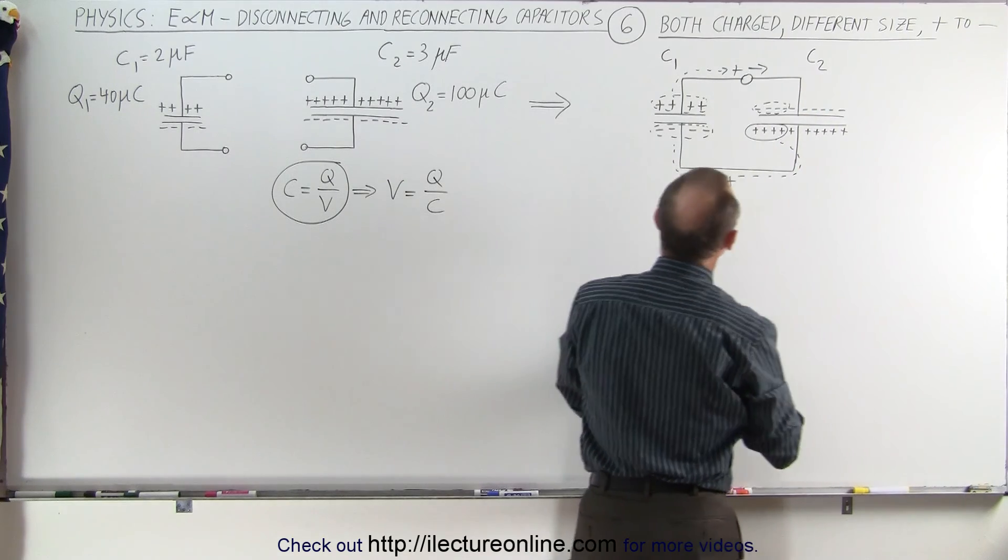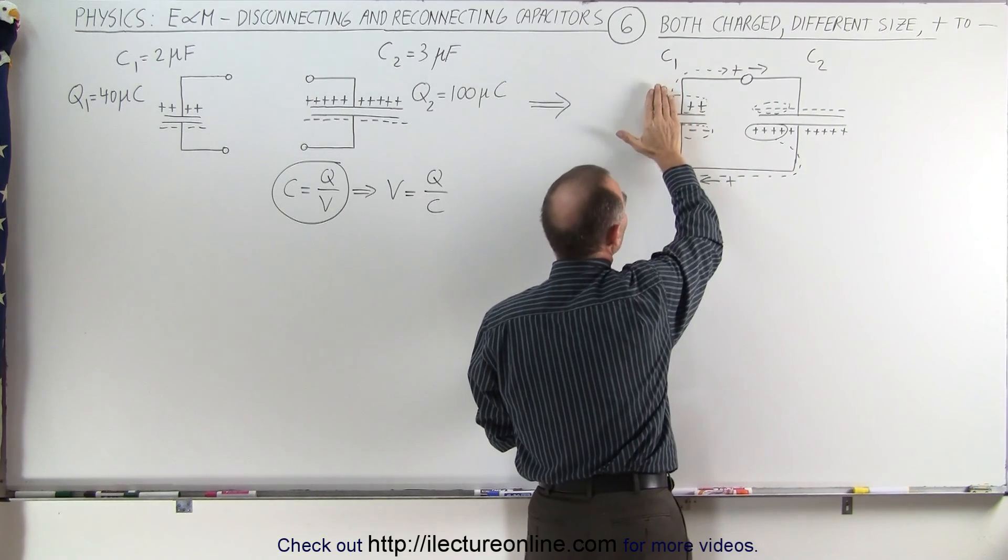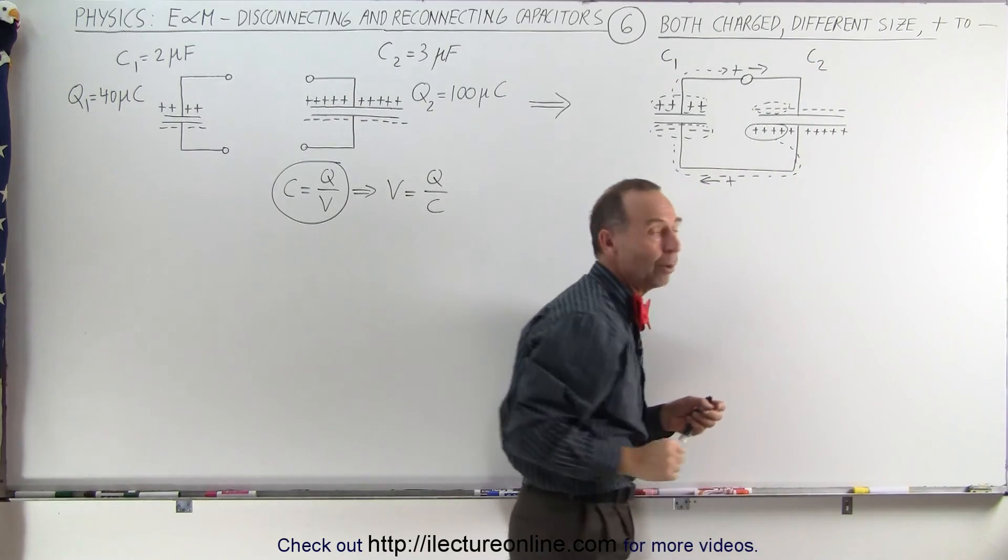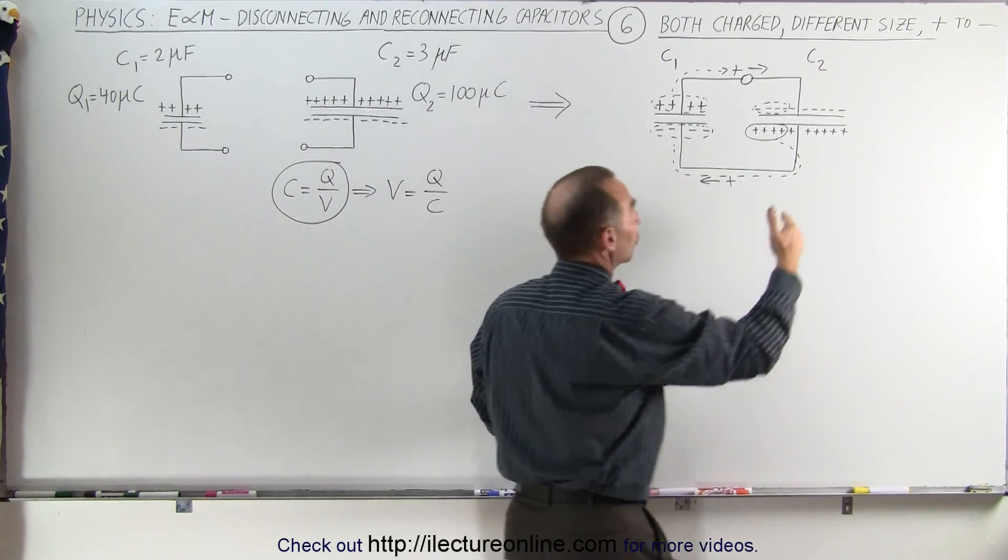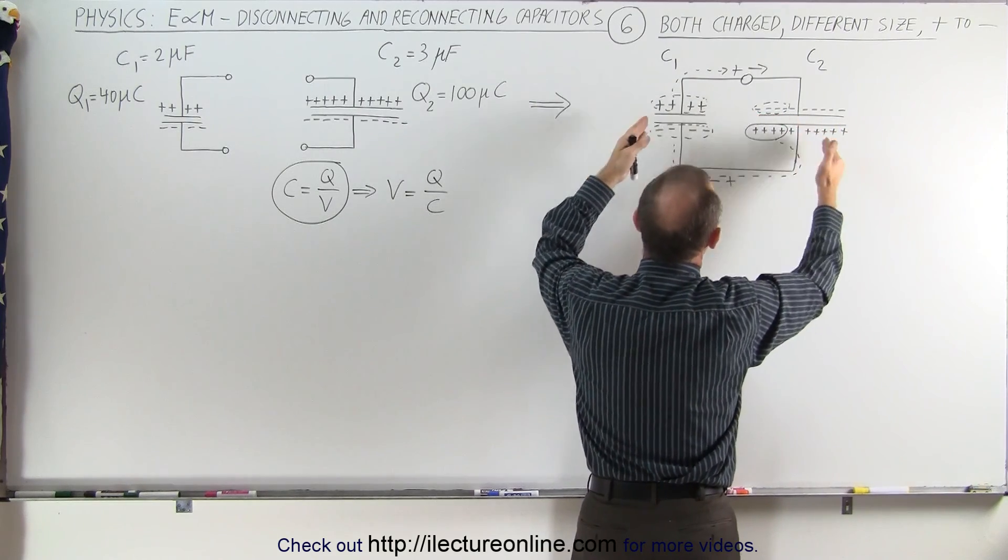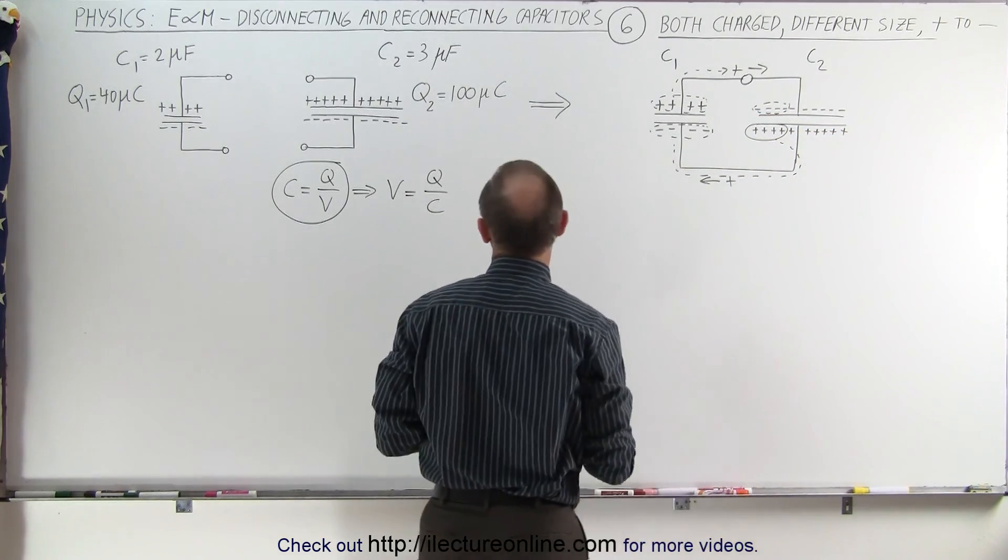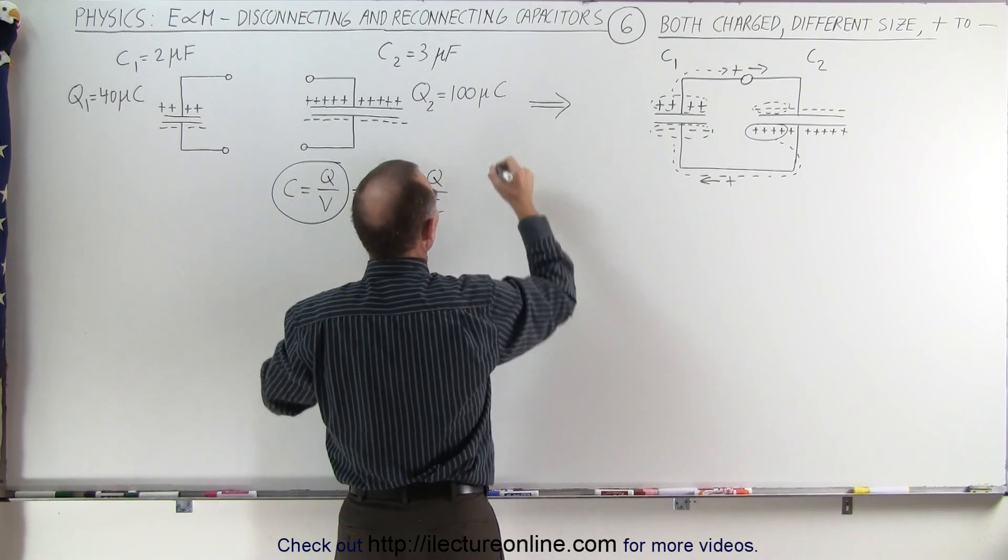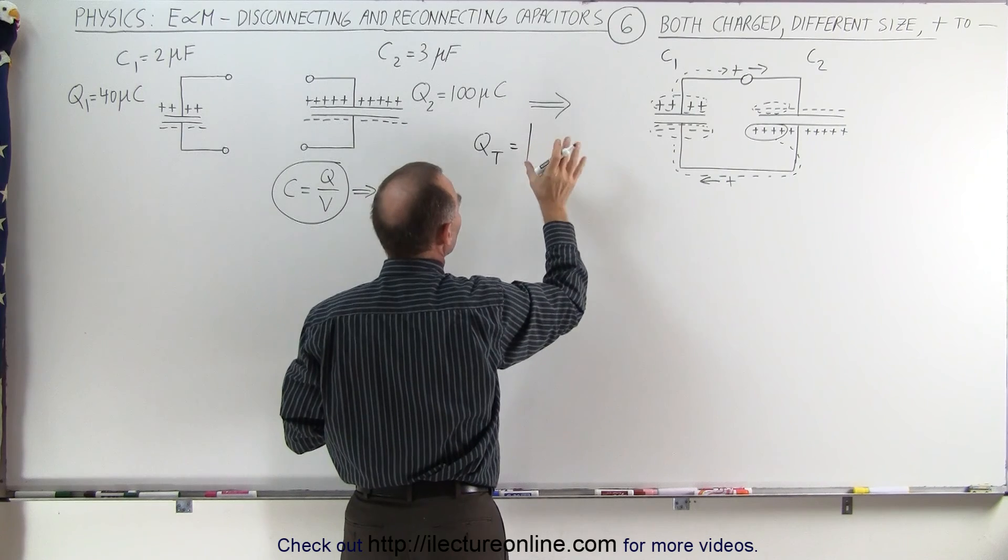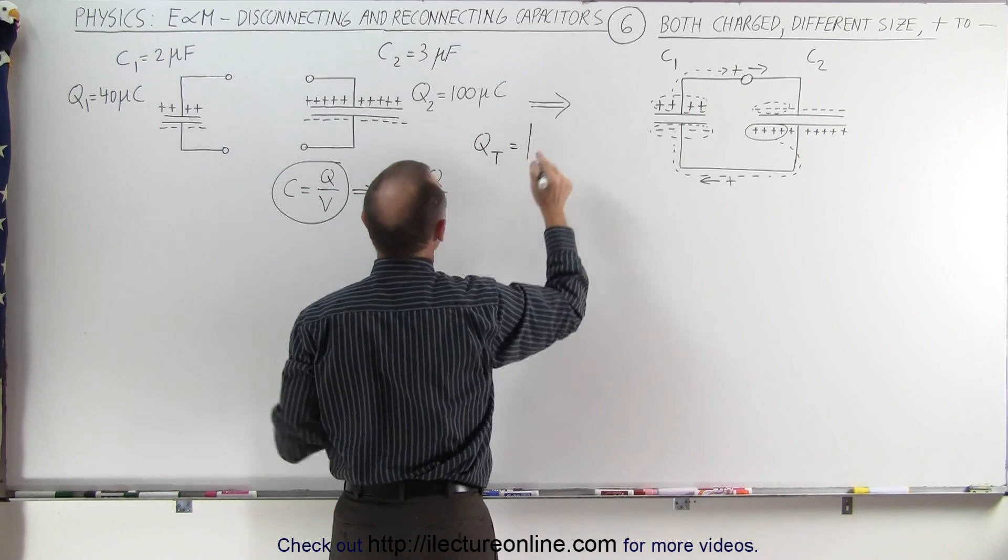So at the intermediate state, you'll have zero charge on this capacitor and only 60 microcoulombs left on that one. Of course, those 60 microcoulombs are not going to stay there. They're going to redistribute themselves across both of these capacitors.